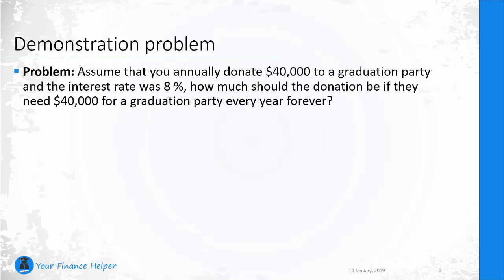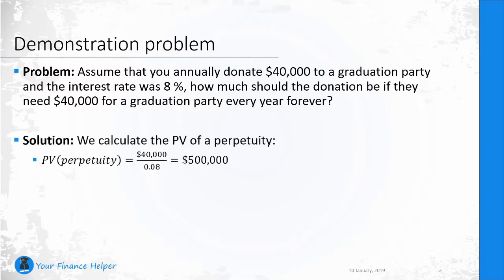Let's use a demonstration problem. Assume that you annually donate forty thousand dollars to a graduation party and the interest rate is eight percent. How much should the donation be if they need forty thousand dollars every year forever? The solution is simply the present value of a perpetuity — there's no growth rate. We divide the cash flow by the interest rate, giving us an investment of five hundred thousand dollars. So if you invest five hundred thousand dollars, they will be able to have a graduation party every year forever.